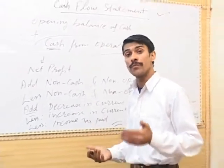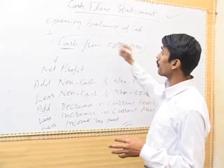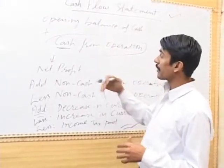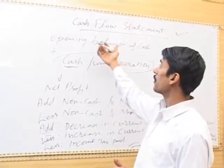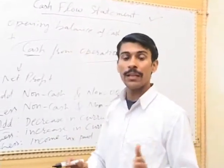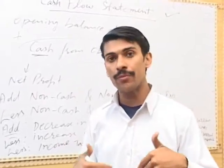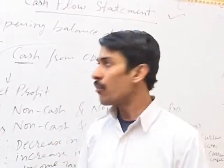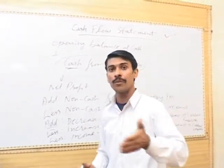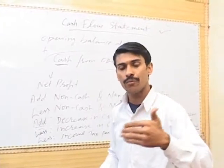The resulting balance will be cash from operations. If it is positive, we add it to the opening balance of cash; if negative, we decrease it from the opening balance. In the next lecture, we will explain how to calculate cash from investment and cash from financing to complete the cash flow statement.